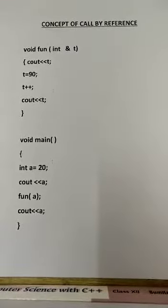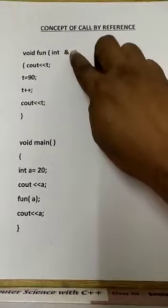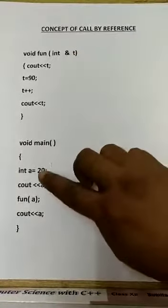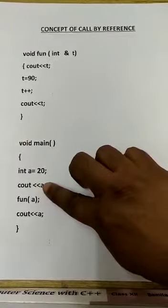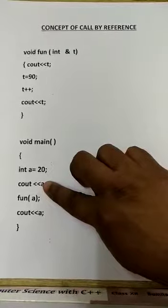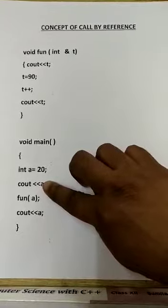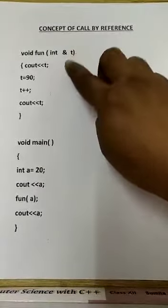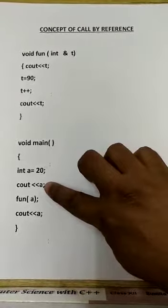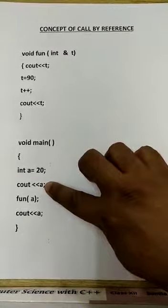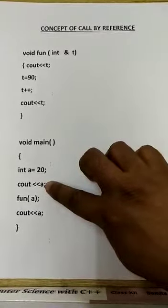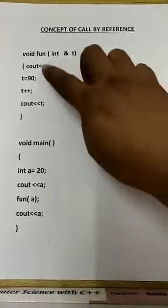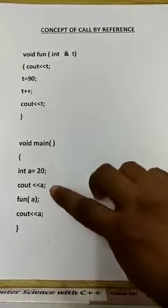According to the concept of call by reference, the formal argument becomes the reference of the actual argument. That is, both the formal and actual argument represent the same memory location, therefore any change in formal will be reflected in actual.